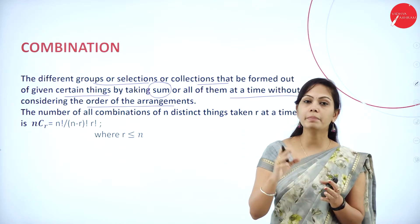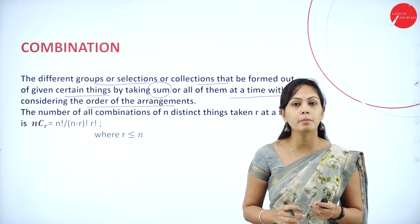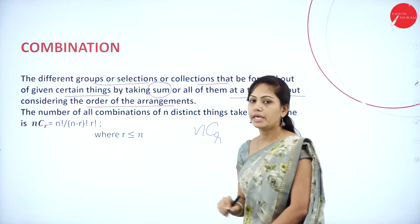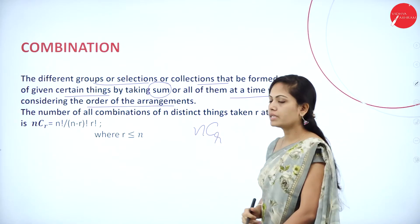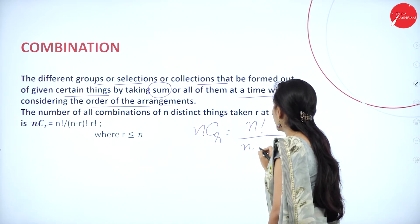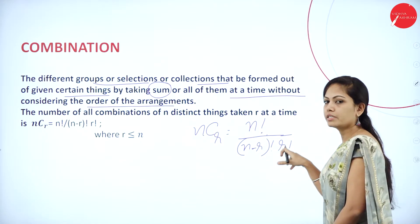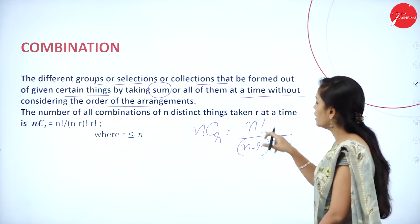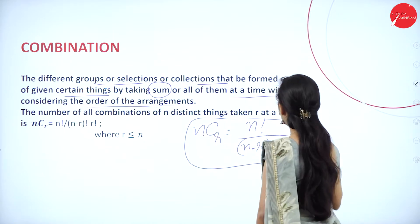In permutation, we used the NPR formula: NPR = N factorial by N minus R factorial. So what is the formula for combination? It is represented by NCR — C means combination, P means permutation. NCR is equal to N factorial divided by N minus R factorial into R factorial. So one extra term, R factorial, is added in the denominator compared to NPR.